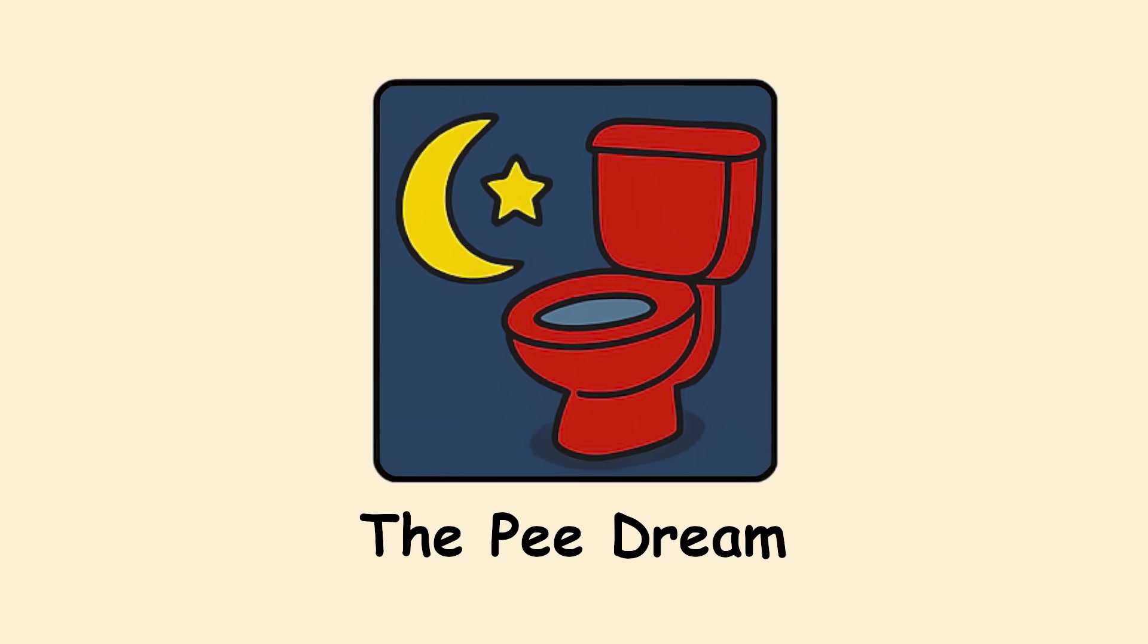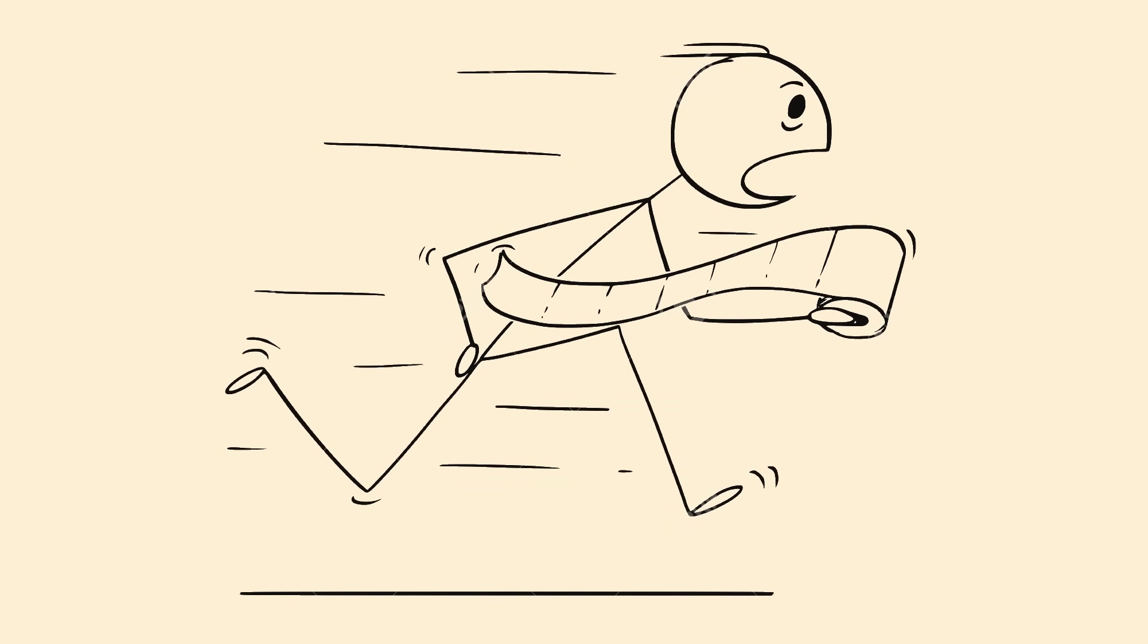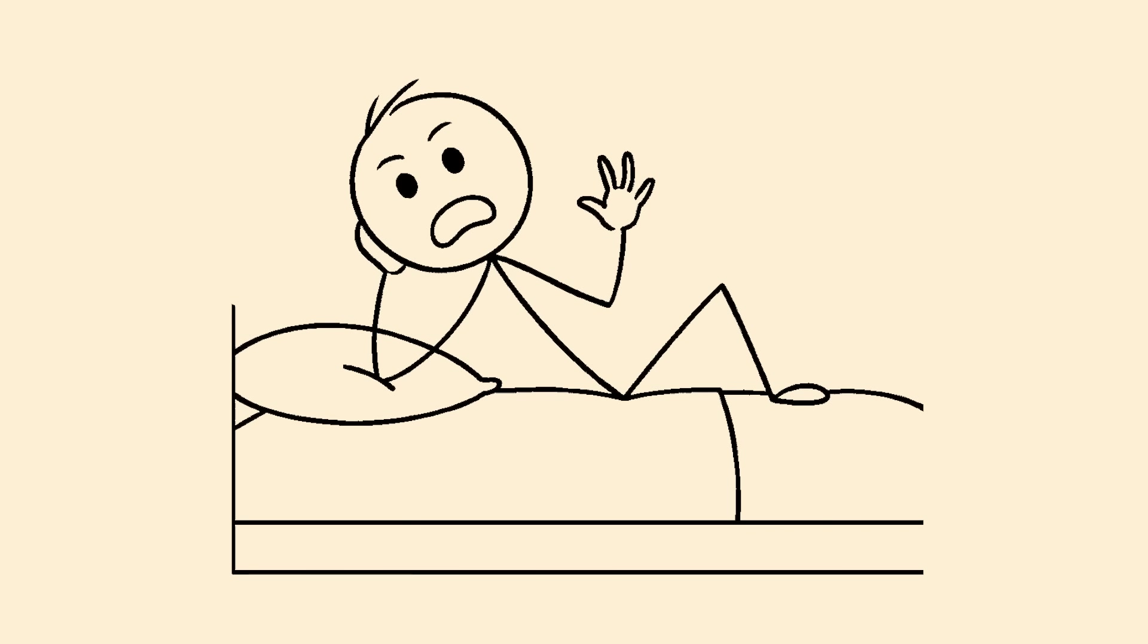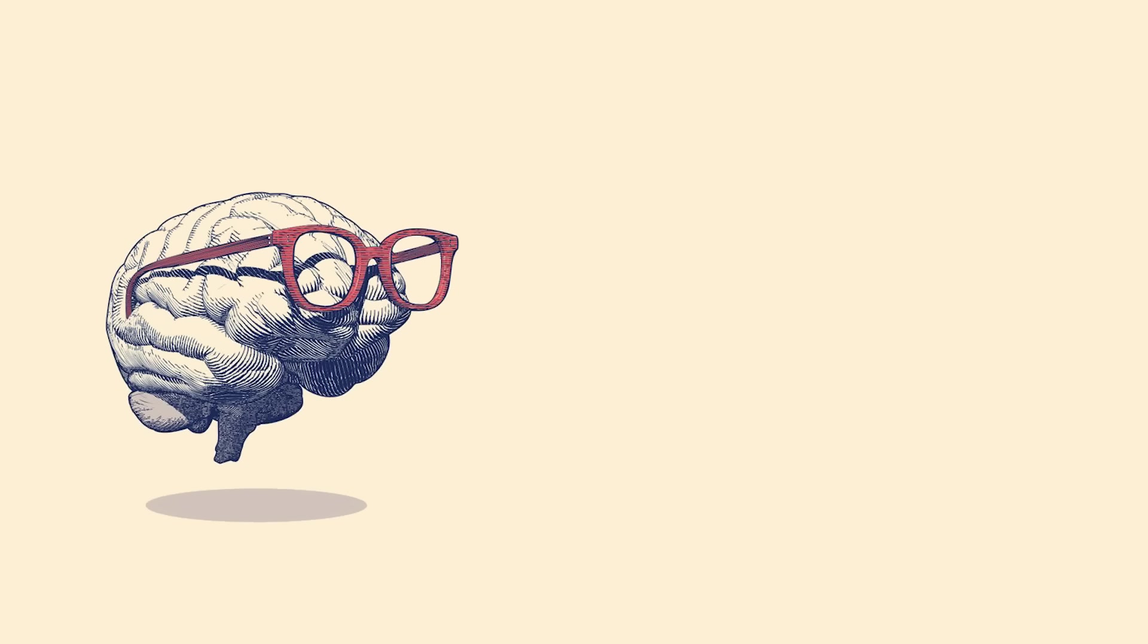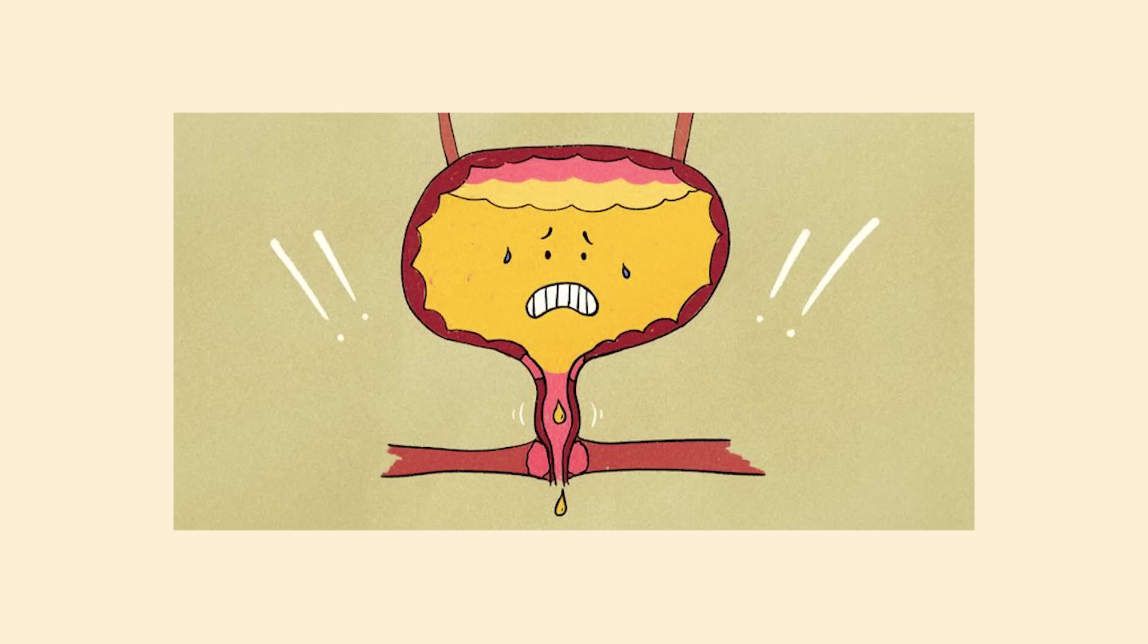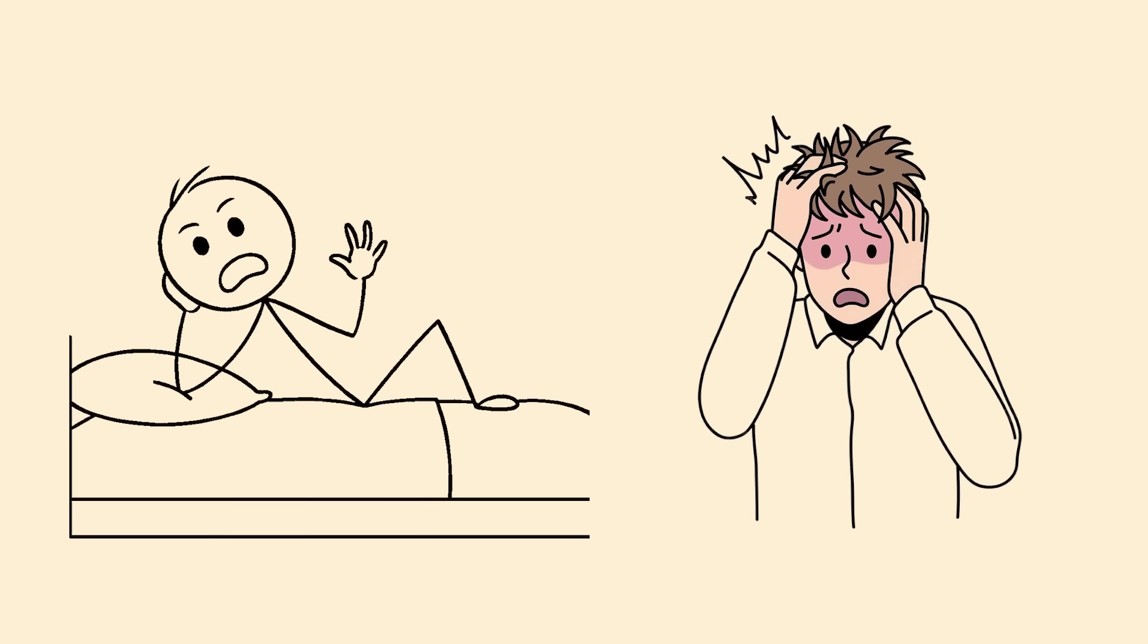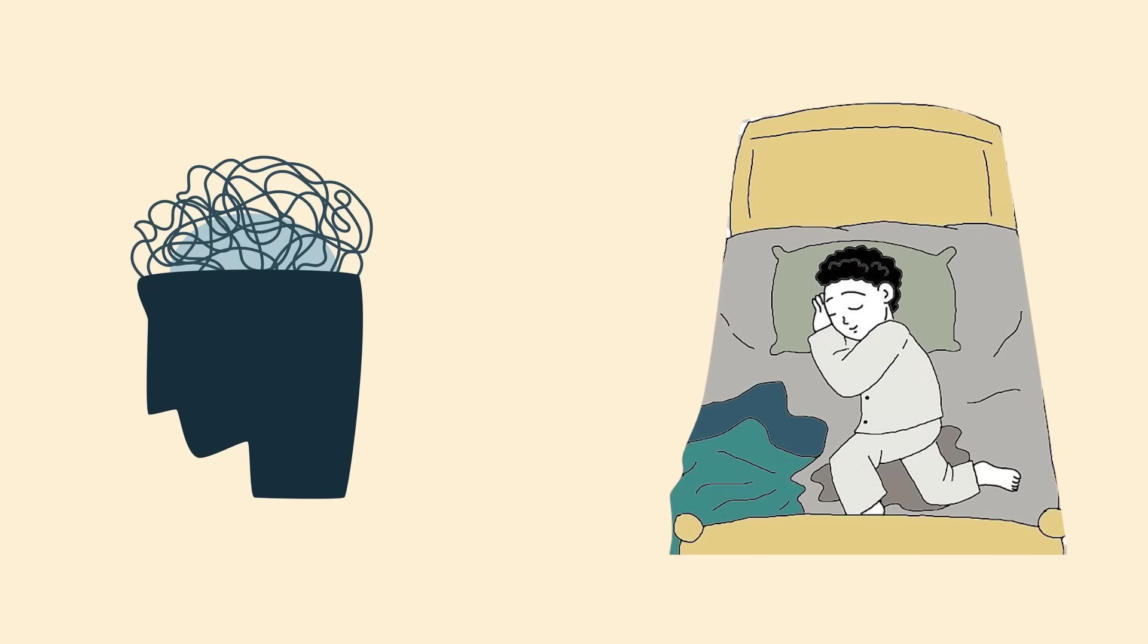The Pee Dream. You desperately need to pee in your dream, finally find a bathroom and sweet relief. Then wake up in horror realizing you're still in bed. Your brain creates elaborate bathroom scenarios while your bladder sends urgent signals. Sometimes you even feel the relief in the dream, making the wake-up extra panicky. It's like your subconscious is trying to trick you into wetting the bed.